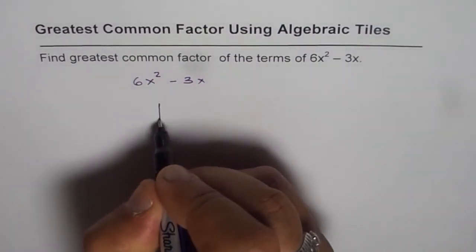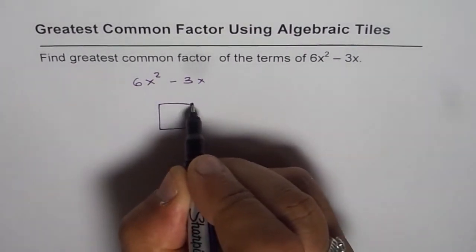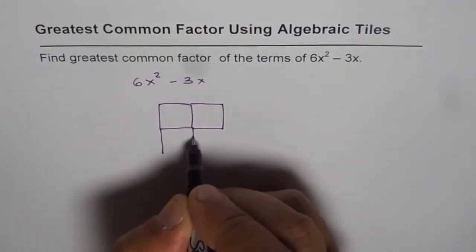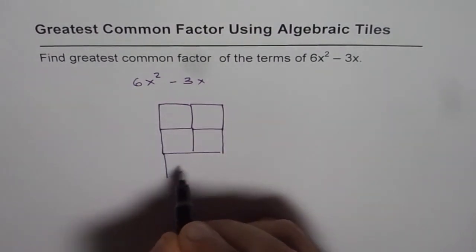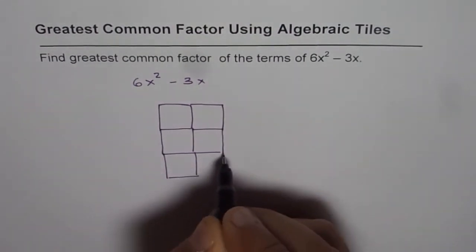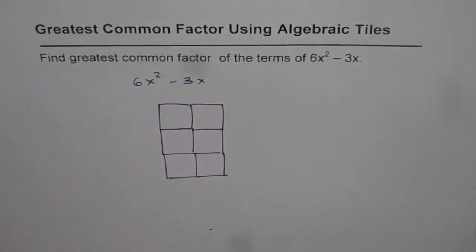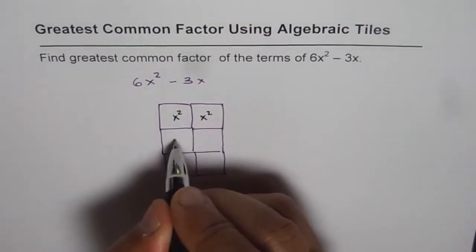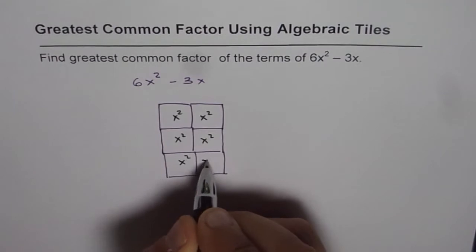6x squared, so we can make 6 of these x squared tiles in this fashion. Since we have 3 of x tiles, we can have 3 layers of it. So that is 6x squared tiles. These are the x squared tiles, 6 of them.